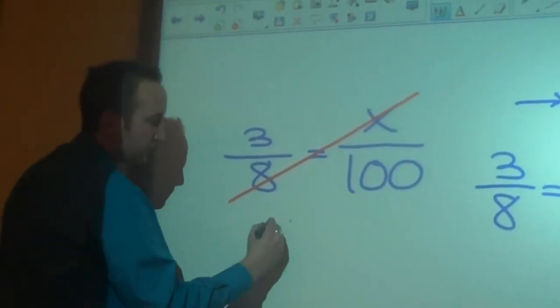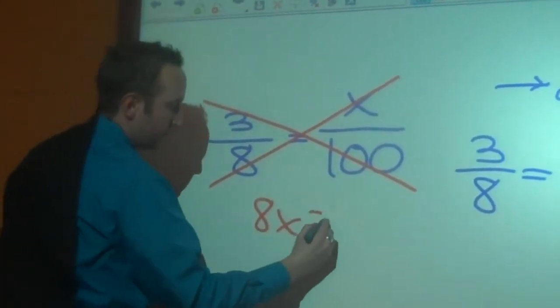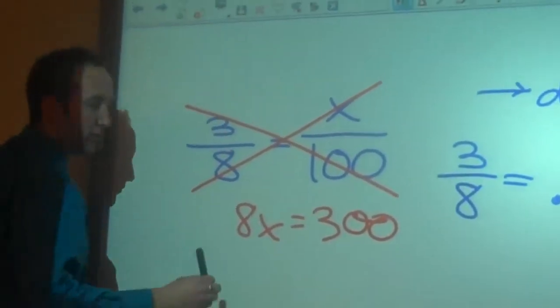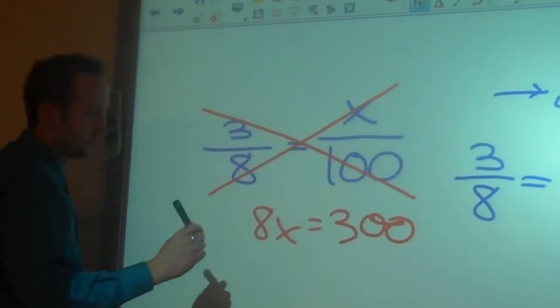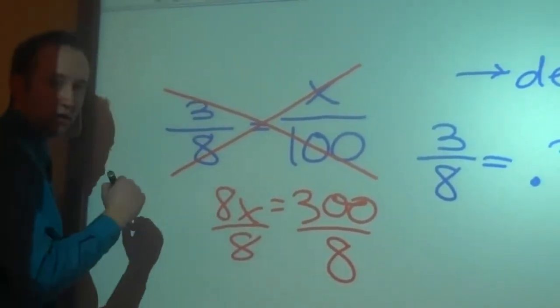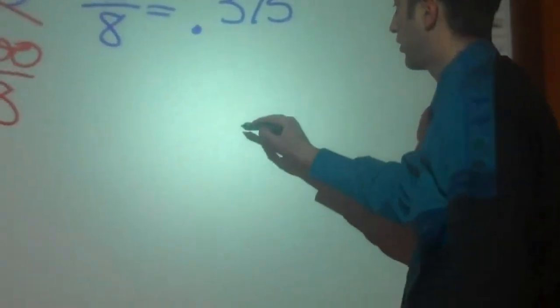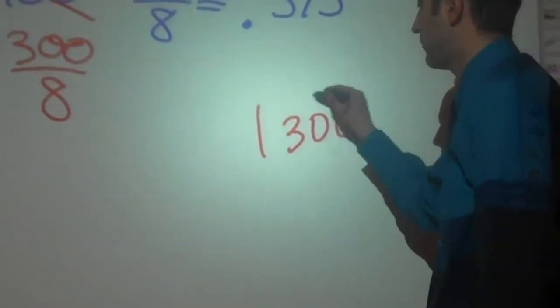Eight times X is? Eight X. Eight X. One hundred times three is? Three hundred. Three hundred. Now, what do we do next, Will? Divide both sides by eight. Divide both sides by eight. And now we're doing three hundred divided by eight. So I'm going to go over here, grab myself some more space. And we're going to go ahead and do three hundred divided by eight.